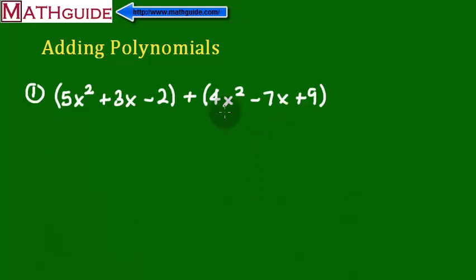To do this vertical format, we're going to take this polynomial over here and rewrite it underneath the first polynomial. When we do this, we are going to rewrite it so that like terms are going to align. I'm going to put the 4x squared underneath the squared term, the minus 7x underneath the x term, and the 9 underneath the constant term.